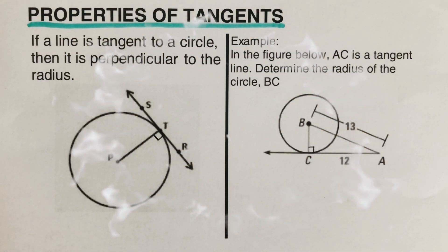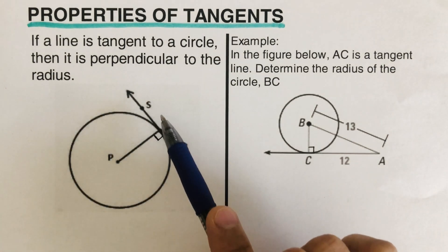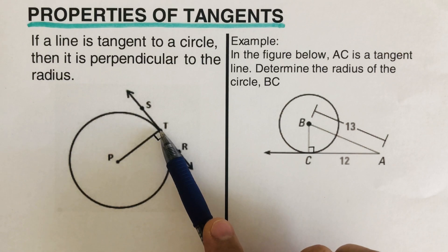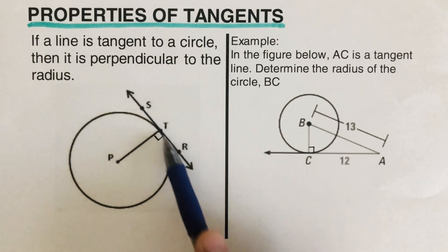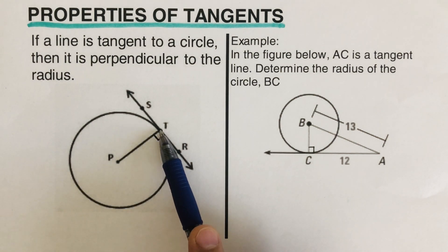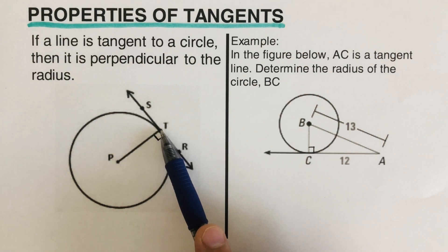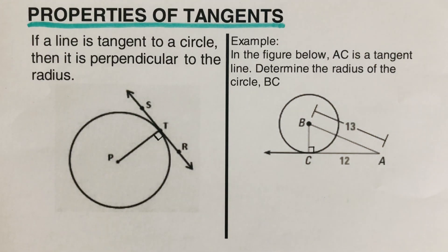Hello everyone. In this video we're going to look into the properties of tangent. As a recap, a tangent is a line that is touching the circle at one point only. So this line SR over here is a tangent because it's touching this circle at one point, which is point T. We call this point the point of tangency. So SR is a tangent line.